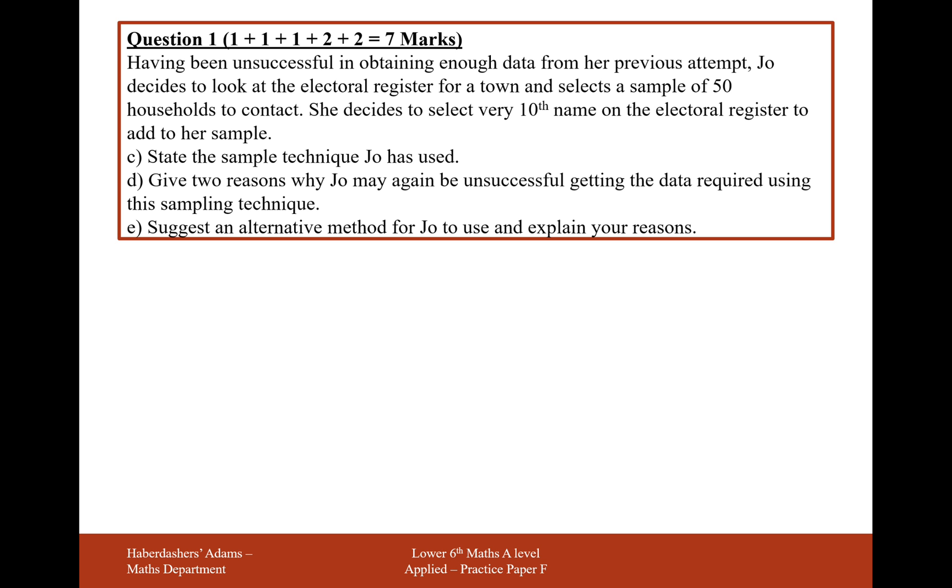Give two reasons why Joe may again be unsuccessful in getting the data required using this sampling technique. If you're choosing every tenth name, then it's not a random sample, which would be ideal. Electoral register may have some errors in it. If people don't sign up to the electoral register, then there are going to be some errors. And there may not be enough households to cover the 50 households that she's going to contact.